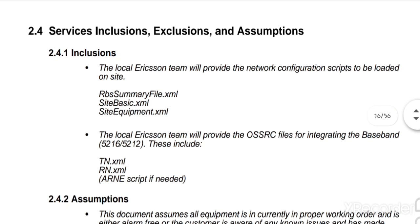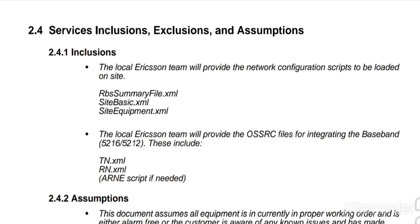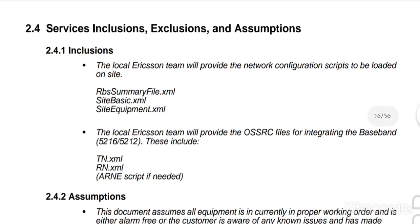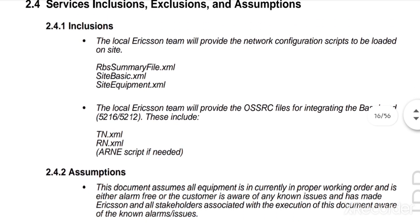Inclusions, service, and exceptions: the local election team will provide the network configuration escape to be loaded on site — RBS summary file (.xml), site basic file (.xml), and site equipment file (.xml). The local election team will also provide the OSSRC file for integrating the baseband 5212 and 5216, including TN.xml, RN.xml, and ARN script. This OSSRC file is the OSS file, the network configuration script, the RBS summary file, site basic, and site equipment — three files total.